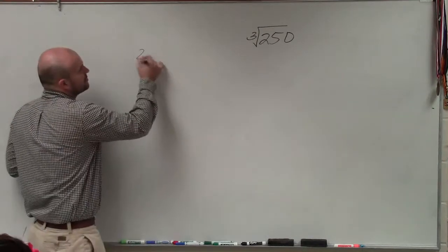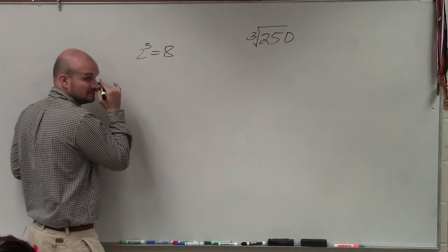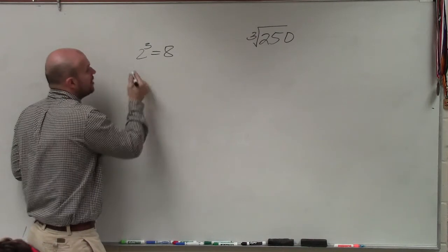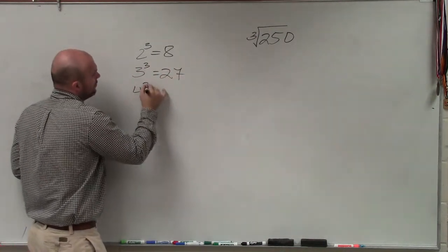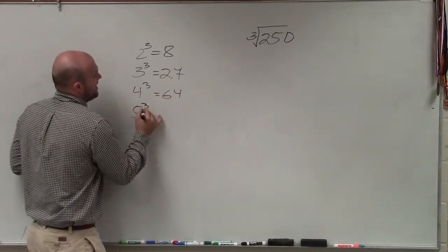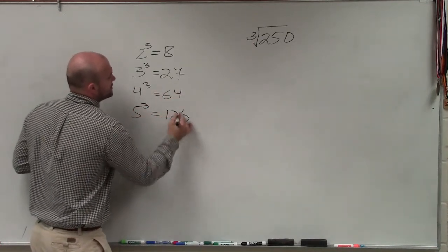For instance, 2 cubed is equal to 8, 3 cubed is equal to 27, 4 cubed is equal to 64, 5 cubed is equal to 125.